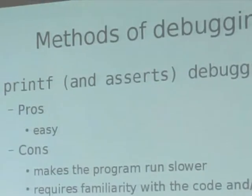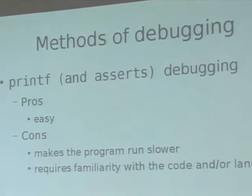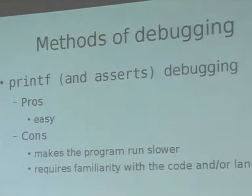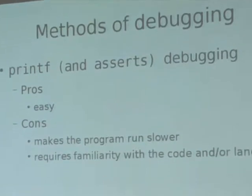There are several different kinds of debugging. A relatively popular one is called printf debugging, and you can also use asserts — that's basically where you put printfs or prints, depending on the language, all over the code to see what the result is and figure out where things might be going wrong. One of the major benefits is that it's really easy to do. Some of the cons, at least with asserts, is it makes programs run slower and it requires familiarity with the code or language, because if you don't know where to look for problems you're likely to put printfs all over the place.